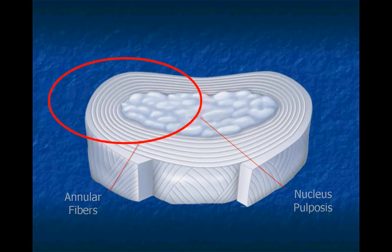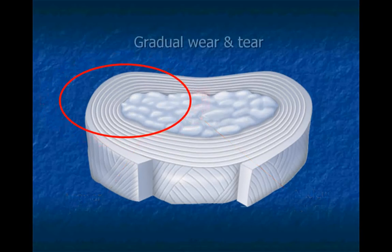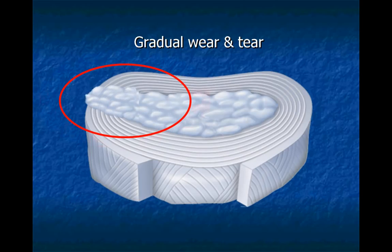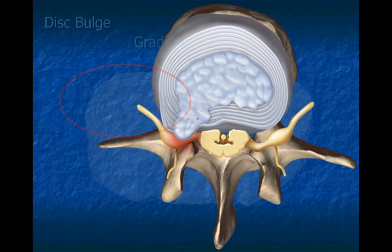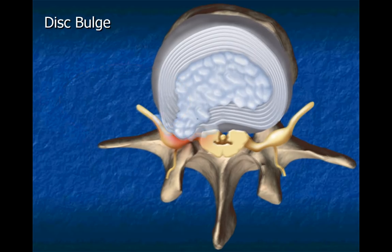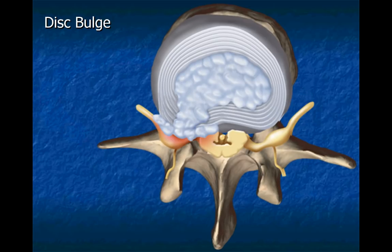Abnormal biomechanics of the vertebrae can cause gradual wear and tear on a disc's annular fibers. As the disc fibers weaken or become injured, a bulge of the disc can develop. In some cases, disc fibers rupture, allowing the nucleus pulposus material to protrude.